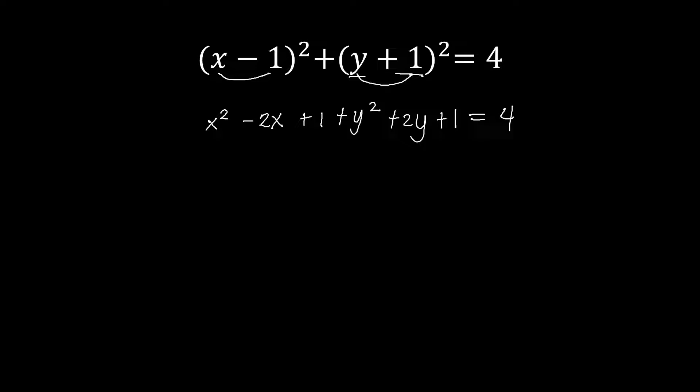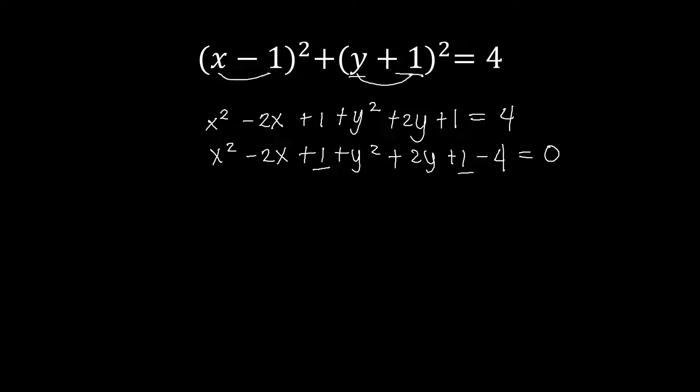Next, we move the 4 to the other side. We've got x squared minus 2x plus 1, plus y squared plus 2y plus 1. We subtract 4 from both sides so that the right side becomes 0. So this is now minus 4, and that's equal to 4 minus 4, which is 0. Next we combine like terms — the positive 1, the positive 1, and the negative 4.